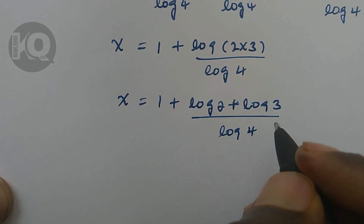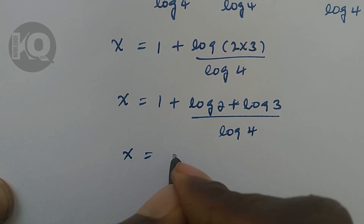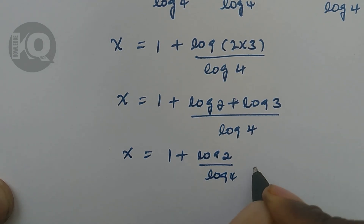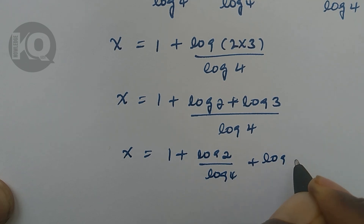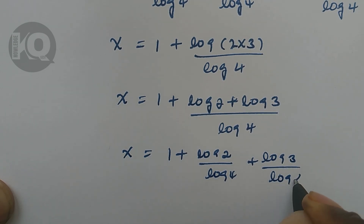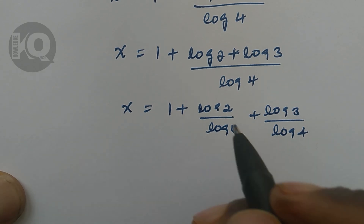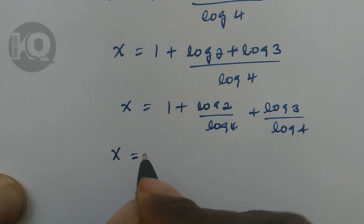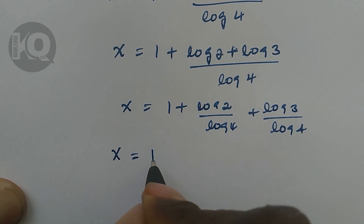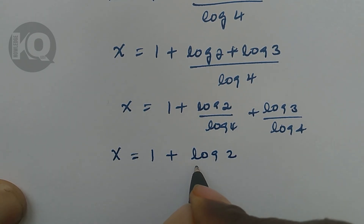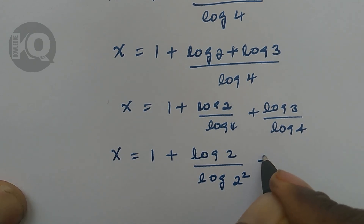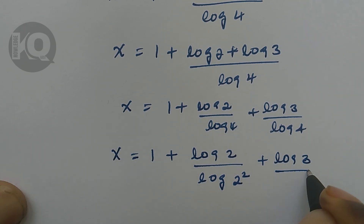Let's separate the terms: X equals 1 plus log 2 divided by log 4, plus log 3 divided by log 4. Now we can write 4 as 2 squared, so X equals 1 plus log 2 divided by log of 2 squared, plus log 3 divided by log of 2 squared.